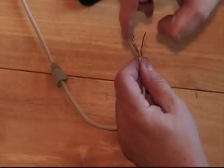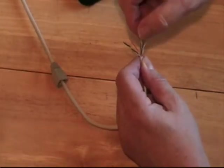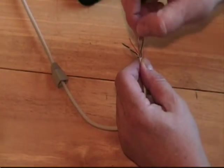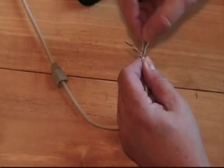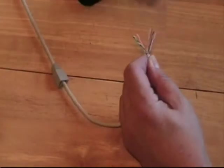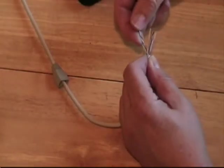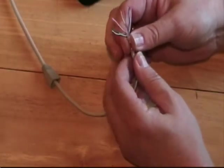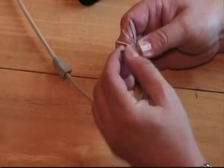Next, untwist and separate the cable into individual strands of wire. The individual wires will now be arranged in a specific order before inserting them into the RJ45 connector.